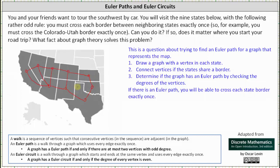You need to be careful here. Both Colorado and New Mexico do share a border with Oklahoma — it's small, but it is a border. This indicates there's an edge connecting New Mexico and Oklahoma, as well as an edge connecting Colorado and Oklahoma.